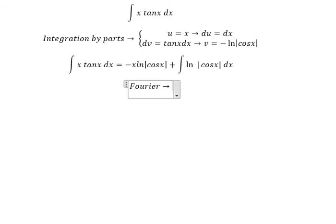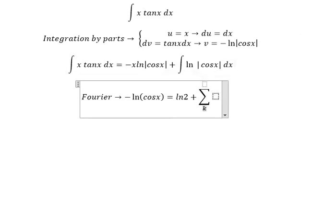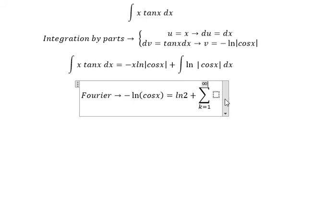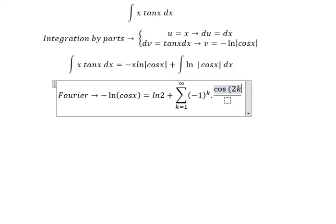We have ln of cosine x equals ln 2 plus the summation, k equals 1 to infinity, negative 1 to the power of k, cosine 2kx over k.